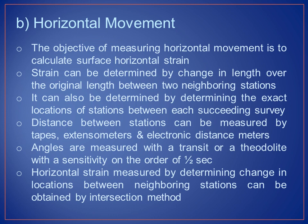The objective of measuring horizontal movement is to calculate surface horizontal strain. Strain can be determined by the change in length over the original length between two neighboring stations, or by determining the exact locations of stations between each succeeding survey. Distance between stations can be measured by tape extensometer and electronic distance meter. Angles are measured with a transit or theodolite with sensitivity on the order of half a second. Horizontal strain can also be obtained by the intersection method.